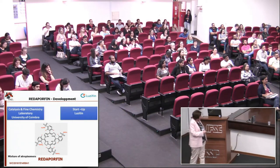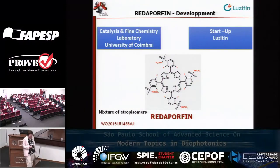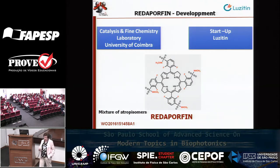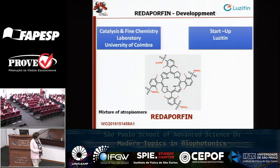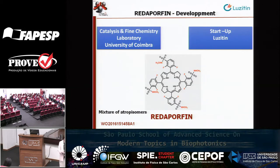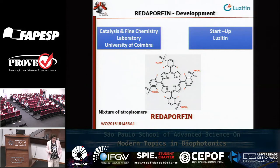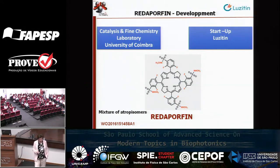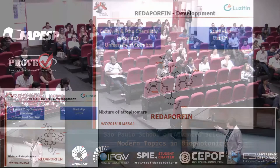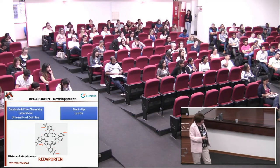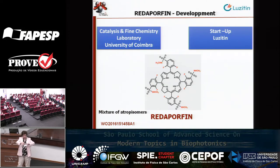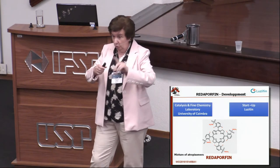This is a story where the Catalysis and Fine Chemistry Laboratory was involved. We contributed to the startup, and importantly, several of my students started their careers at Lusitin. We prepared this compound, and one of the most difficult parts was the development of the analytical process — the analytical team always said it's not pure because they saw a lot of peaks. What happens is that the sulfonic groups, due to the fluorine atoms, can be up or down relative to the porphyrin ring.